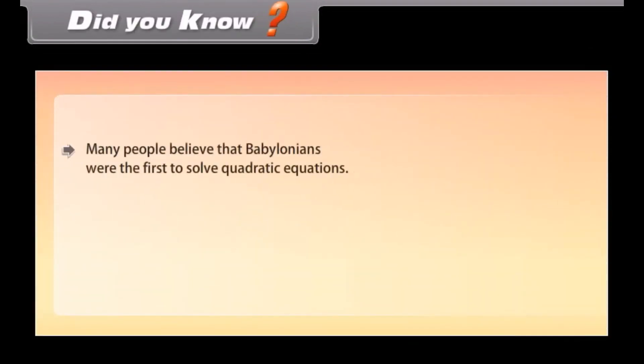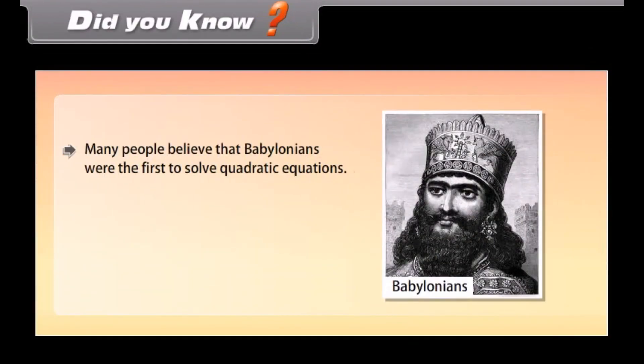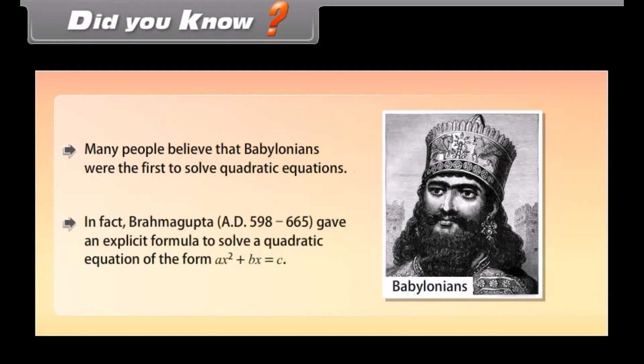Did you know? Many people believe that Babylonians were the first to solve quadratic equations. In fact, Brahmagupta (AD 598–665) gave an explicit formula to solve a quadratic equation of the form ax² + bx = c.